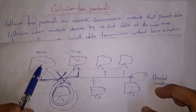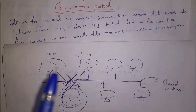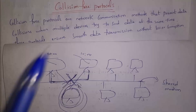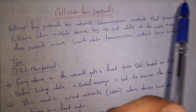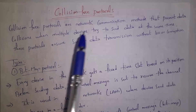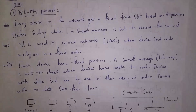So in a shared medium, whenever multiple computers send data at the same time, collision will occur and data will be lost. If multiple computers want to send data without any collision, they need to use collision free protocols. Collision free protocols are network communication methods that prevent data collisions when multiple devices try to send data at the same time. These protocols ensure smooth data transmission without loss.